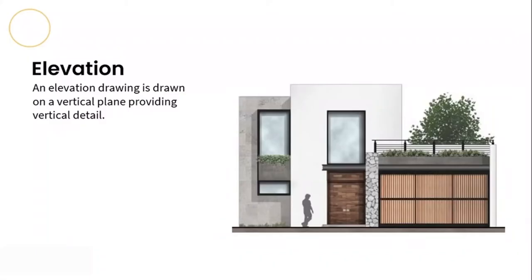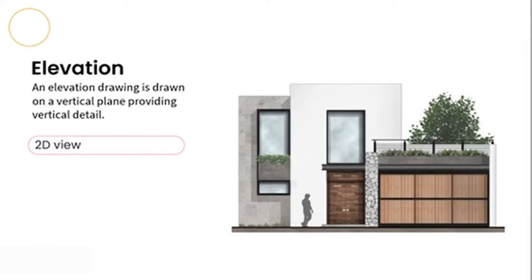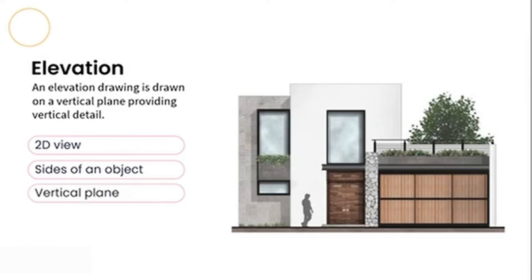Here are some key characteristics of your elevation drawings. Firstly, they are generally a 2D view, but as you can see in this image, if we're getting a little creative, we can do a 3D view. I would essentially use my 2D view for construction drawings or more technical versions, whereas 3D views would be used as a presentational format drawing. An elevation shows us the side of an object and gives us a great sense of height.